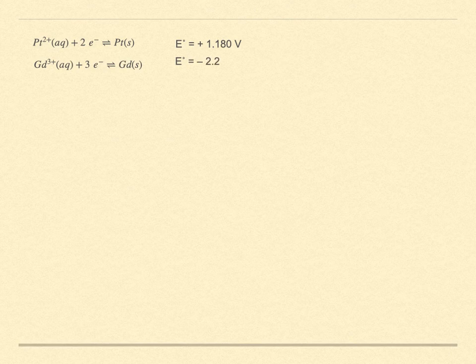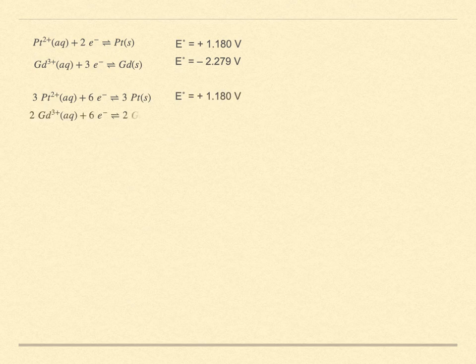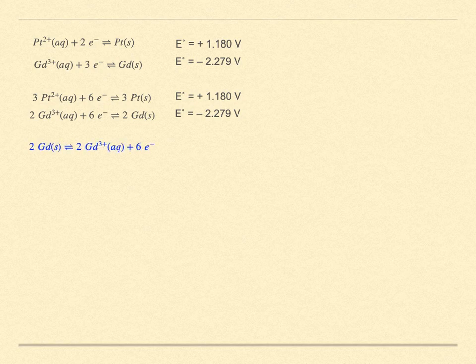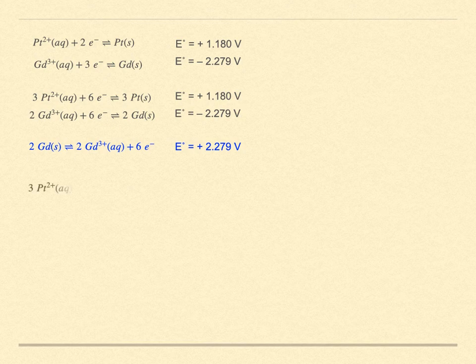Half reactions are combined to form complete cells. We choose two reactions from the table of standard reduction potentials. Scale them to have the same number of electrons transferred. Do not scale the standard reduction potential. Take the one with the least positive, the most negative potential, and run it as an oxidation. Add the two half-reactions together, canceling the electrons.